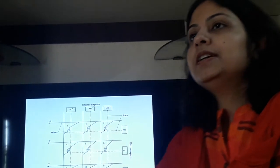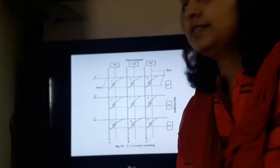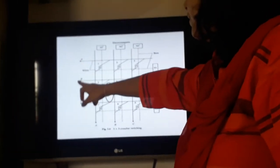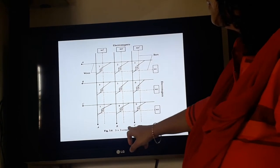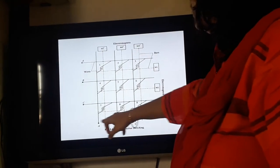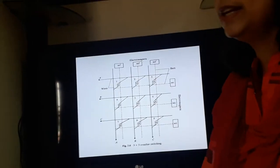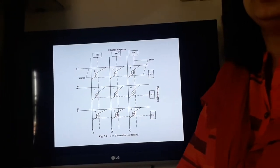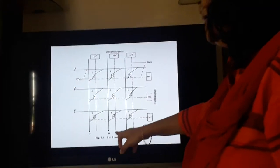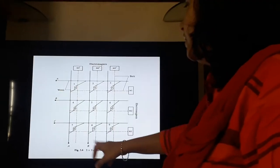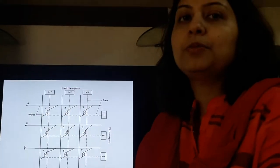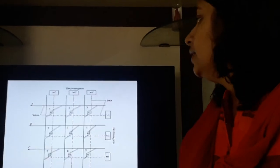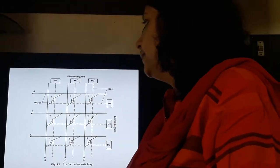First we will study about the 3x3 crossbar matrix. It consists of 3 activators on one side and 3 activators A, B, C on the other side. The total number of contact points is NxM, in this case 3x3, giving 9 contact points. The total number of activators will be N plus M, that is 6 activators.